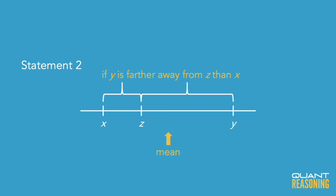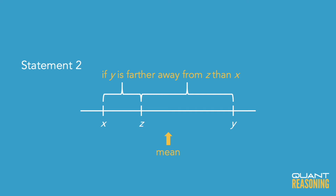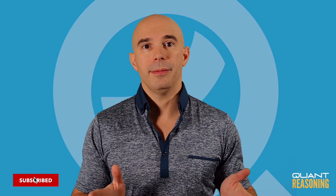So I don't know who's farther away from z — x or y — and therefore statement two is not sufficient on its own. We can go ahead and eliminate the answer choices that claim it is sufficient on its own. So B and D are gone, and we're down to A, C, E.